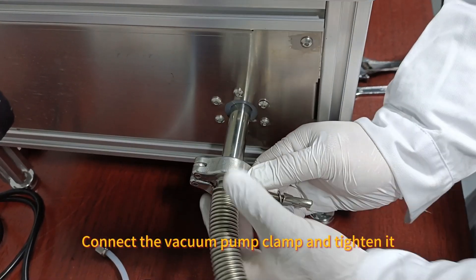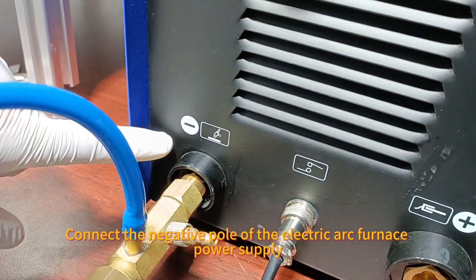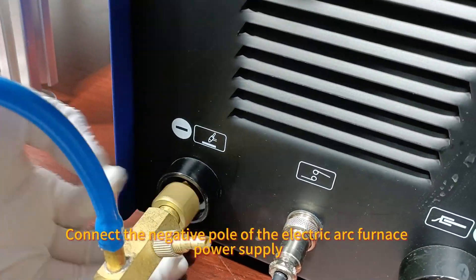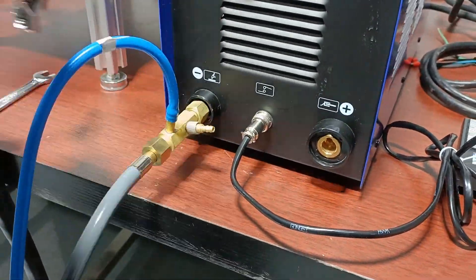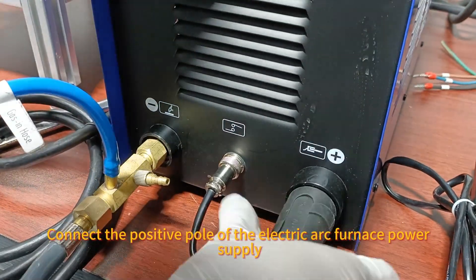Connect the vacuum pump clamp and tighten it. Connect the negative pole of the electric arc furnace power supply. Connect the positive pole of the electric arc furnace power supply.